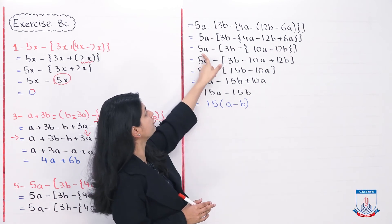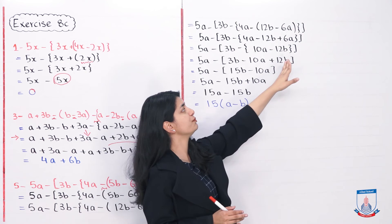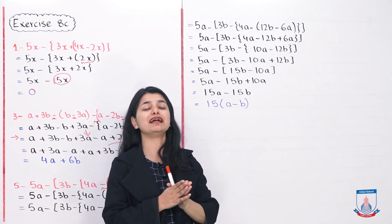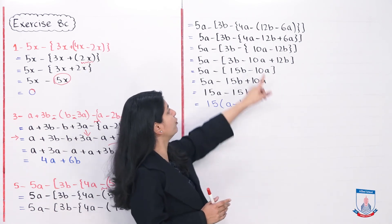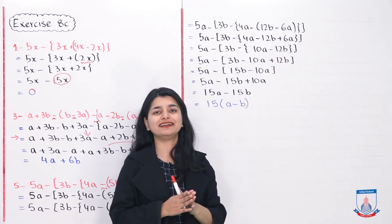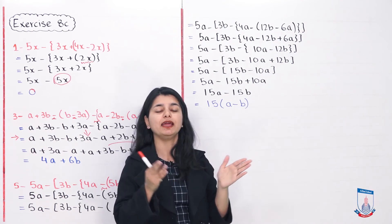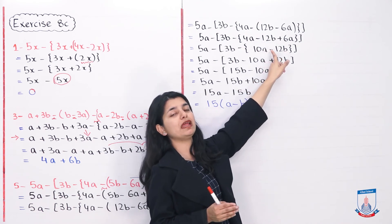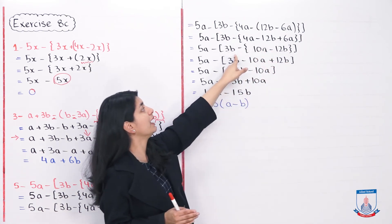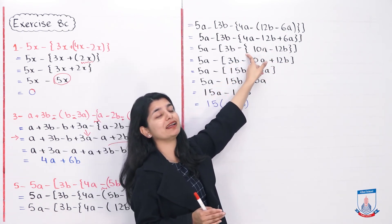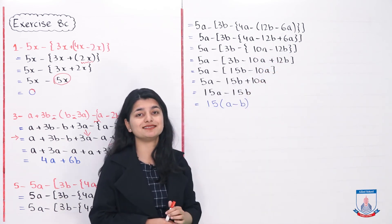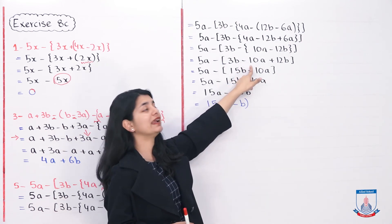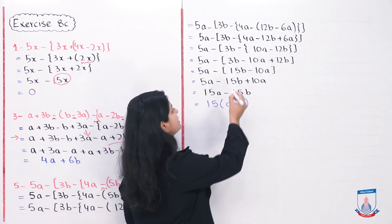5a minus 3b is copied as it is. Inside the braces we have 4a minus 12b plus 6a. Since 4a and 6a are like terms both inside the braces, I add them: 4 plus 6 is 10, giving 10a, and 12b comes down as it is. So inside the braces we now have 10a minus 12b. Outside the braces is a minus sign, so I multiply both terms by minus: 10a which is positive becomes minus 10a, and 12b which is negative becomes plus 12b. The signs are now changed.